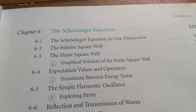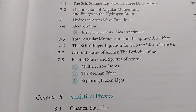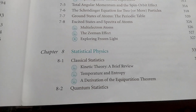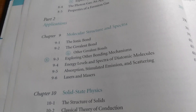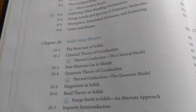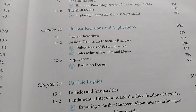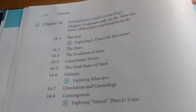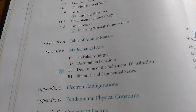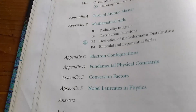The Schrodinger Equation! Classic stuff. Atomic physics. Statistical physics. There's quite a bit of information in this book. Molecular Structure and Spectra. Solid State Physics. Goes on and on. More Nuclear Physics. Nuclear Reactions and Applications. Particle Physics. Astrophysics and Cosmology. And then there are some other things here — some appendices, and answers to some of the problems in the book.